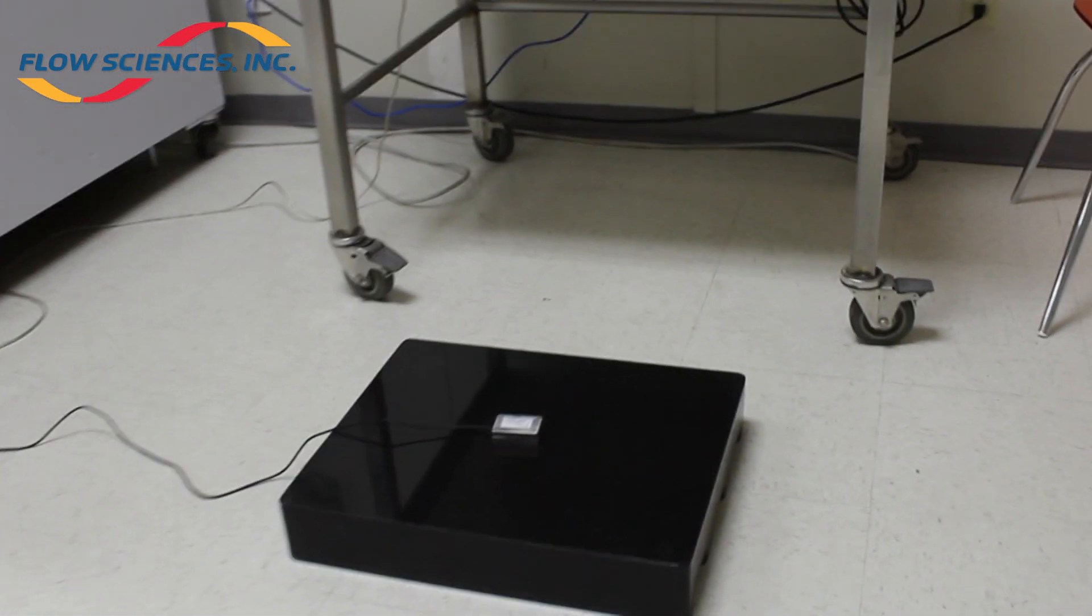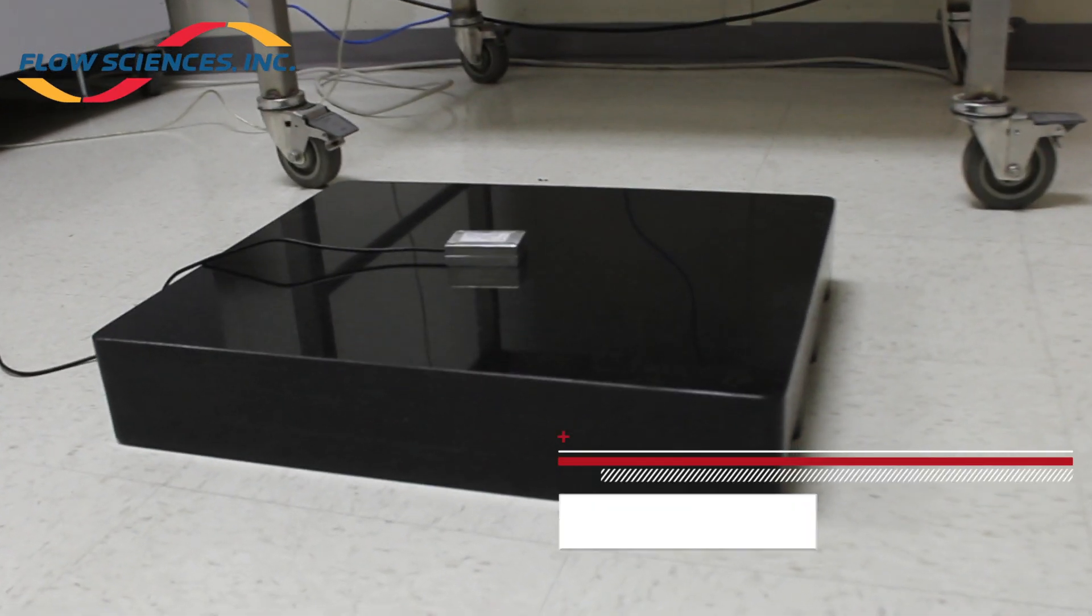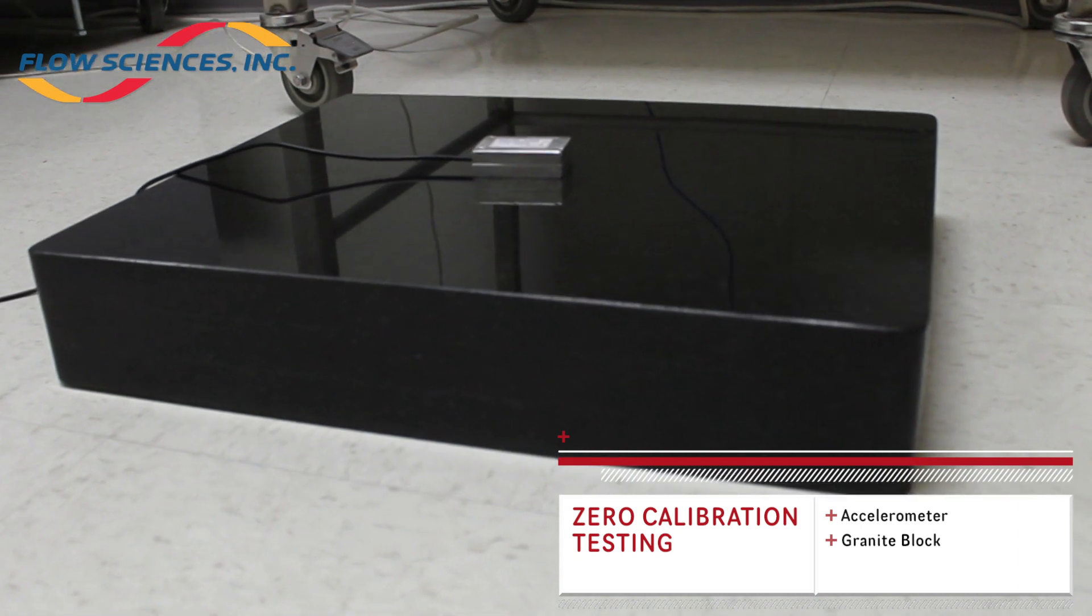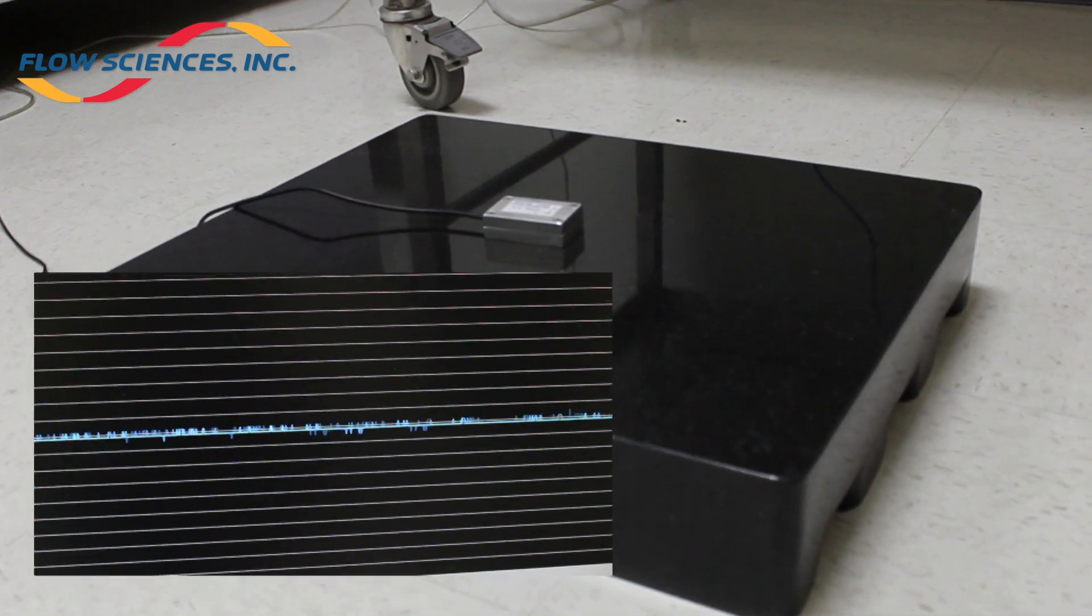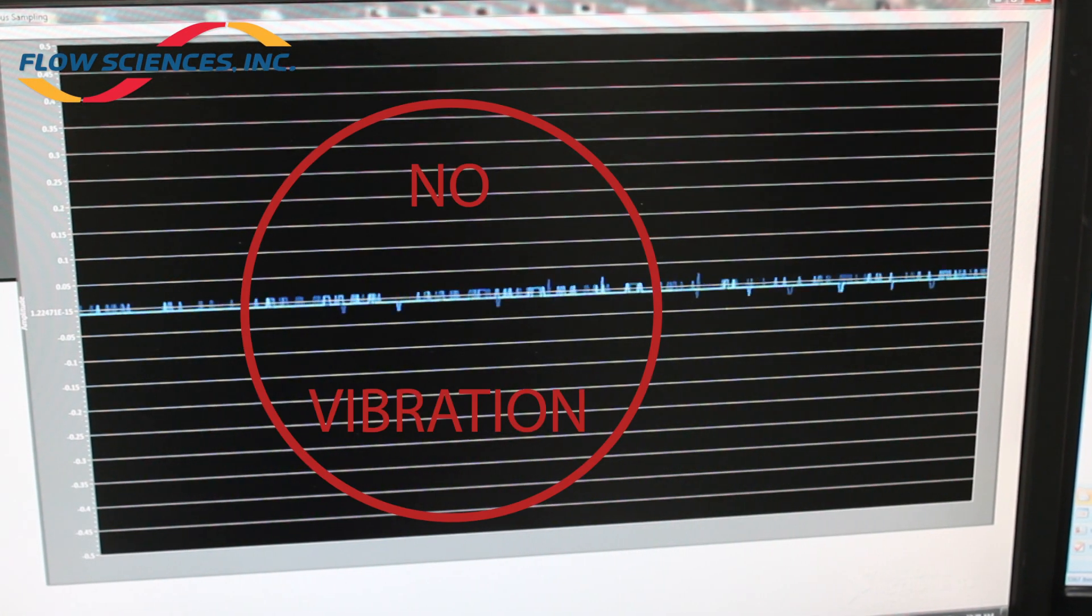Test 1: A granite block was laid on the center of the concrete tile floor in the laboratory. The sensor was placed on top. This was to isolate the sensor as much as possible from any vibrations and get a baseline or zero reading.